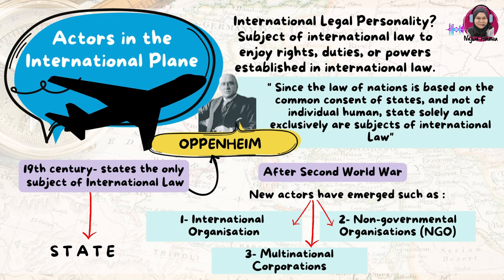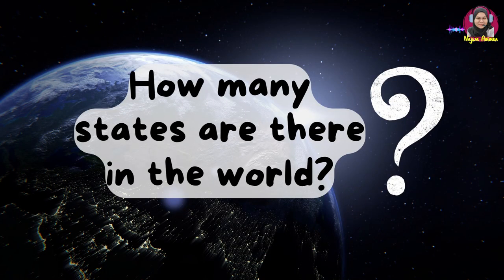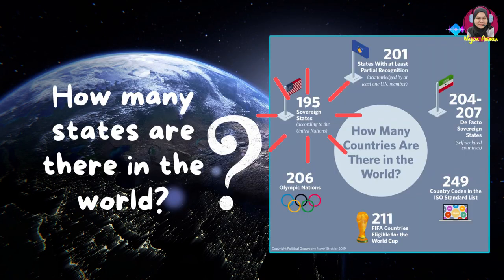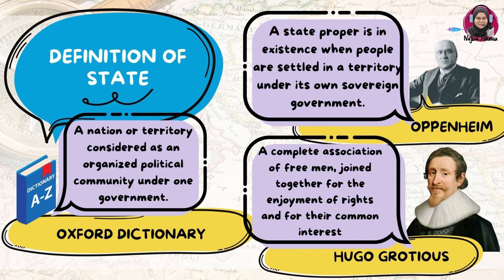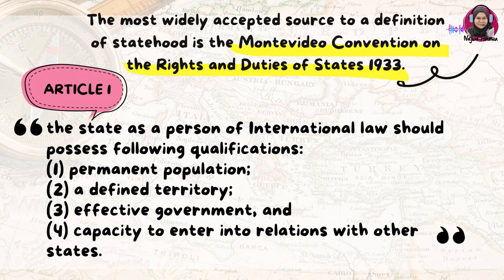In other words, the state can sue and can be sued. According to the United Nations, there are 195 sovereign states in the world today. According to the Oxford Dictionary, a state is a nation or territory considered as an organized political community under one government.